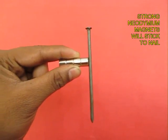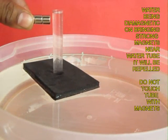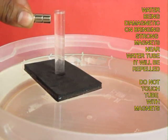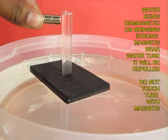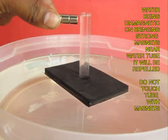Now here are four strong neodymium magnets and they will attract a nail. If you bring these magnets near the test tube, the water would be repelled by the magnets. Do not touch the magnets with the test tube.